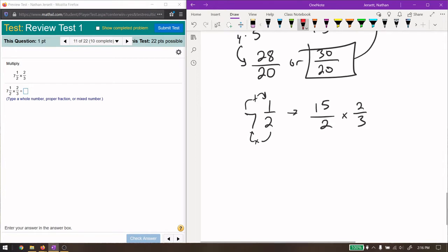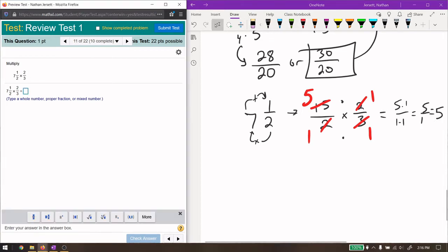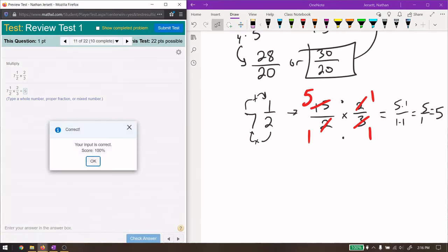We can cross cancel here quite easily. 2 divided by 2 is 1. 3 divided by 3 is 1. 15 divided by 3 is 5. And now on top, we have 5 times 1. On the bottom, we have 1 times 1. We have 5 over 1 or just 5. 5 divided by 1 is 5. So 5 will be our final answer.